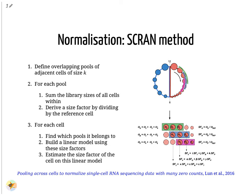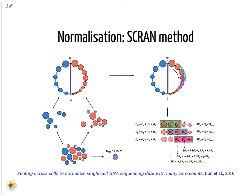By this method, the issue of low sequence coverage is worked around by turning cells with low library sizes into useful components of a size factor that can be applied to similar cells. Such novel normalization methods were commonplace a few years ago, but as sequencing technologies have improved, the issue of many zero counts in a matrix becomes less important, and normalization size factors can be derived using bulk RNA-seq methods once again.